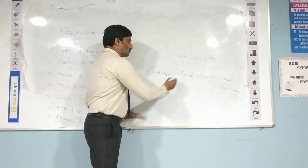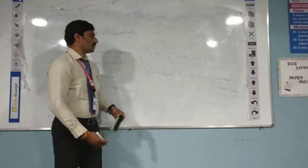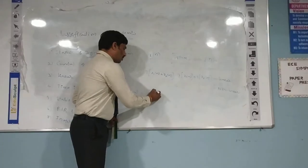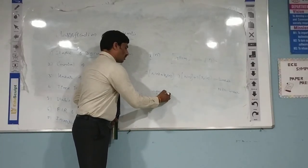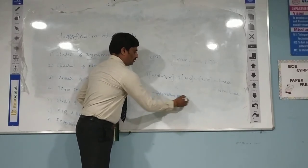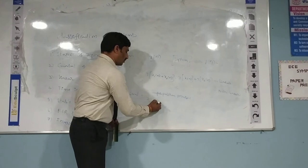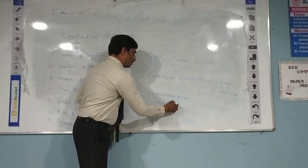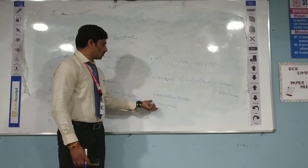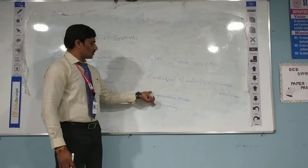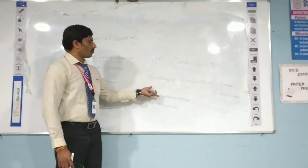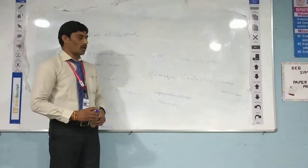The linearity property possesses two principles: one is the superposition principle and the second is homogeneity. If any system satisfies both of these principles, then it has the linearity property; otherwise it is non-linear.